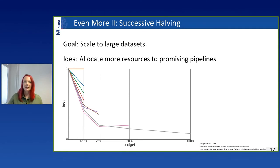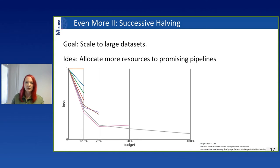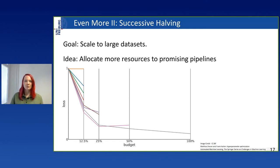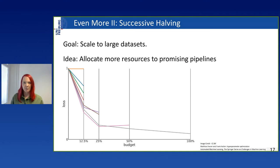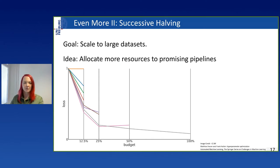Having solved that, we took care of large datasets using successive halving, which recently gained a lot of attention. Successive halving is a simple concept: if you have an iterative algorithm like gradient boosting or neural networks, you can get a good estimate of final performance after only a few iterations. This also works for data subsets. Successive halving exploits this by evaluating all configurations on the lowest budget, dropping half of them, doubling the budget, and repeating. You can evaluate many more configurations than if you evaluated all on the full budget.